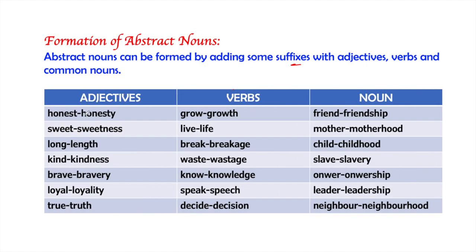For example, these words are adjectives and out of adjectives, abstract nouns are formed. Like honest is a quality, honest is an adjective, and we can make abstract noun out of honest that is honesty. So we have added some letters with honest and it has become honesty. In the same way, sweet is a quality, sweetness is abstract noun which is made by adding 'ness'. Long is length, kind is kindness, brave is bravery, loyal is loyalty, true is truth.